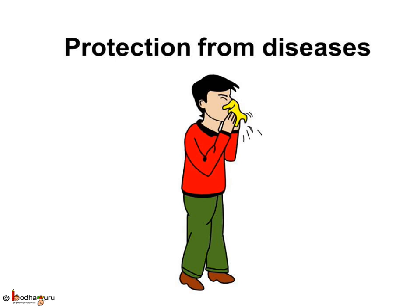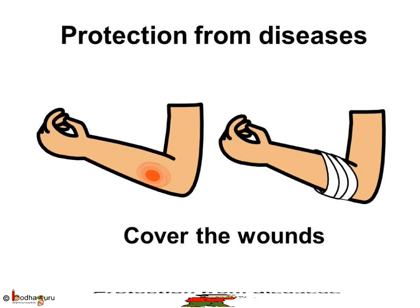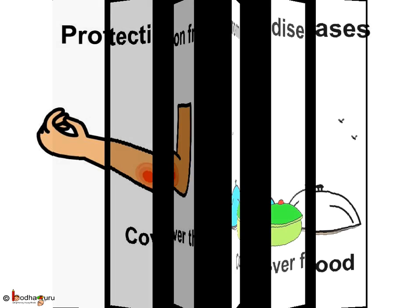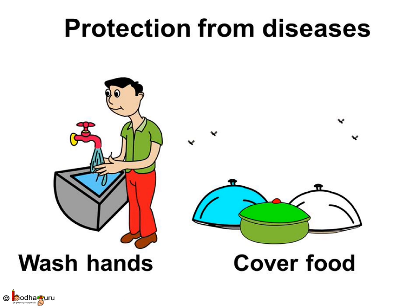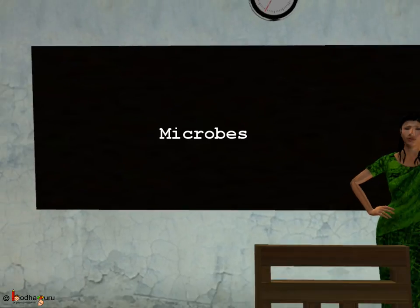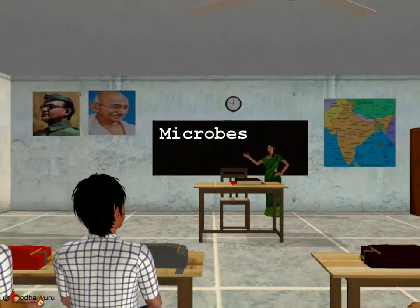What else can be done to protect ourselves from diseases? We should cover our mouth and nose while sneezing or coughing, as germs from an infected person spread through the air to others when the mouth is uncovered. Wounds should be covered; otherwise, germs can make the wound worse. Now you have understood how germs spread diseases and how we can save ourselves from getting sick. Keep proper hygiene and maintain good habits, as microbes love damp, dirty places. Cleanliness is the best weapon to fight them.